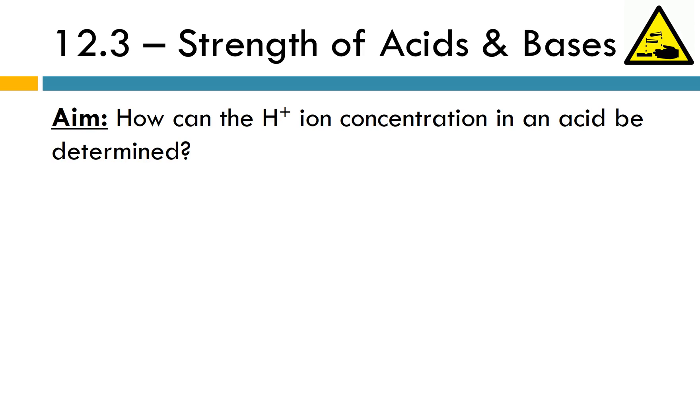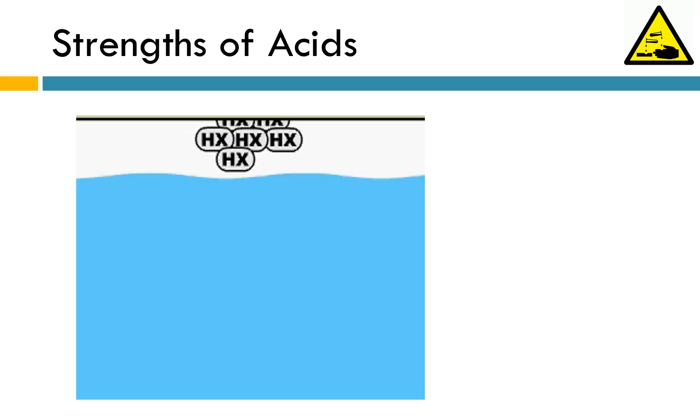Hello chemists, this is Ms. Pluccino and you are watching the screencast 12.3, Strengths of Acids and Bases. In this lesson we're going to talk about how to determine the H+ ion concentration in an acid, and it turns out it really hinges on the idea of is it a strong or weak acid that you are dealing with. So we'll talk about how to figure that out. Alright, let's get started.